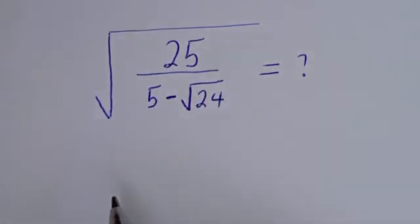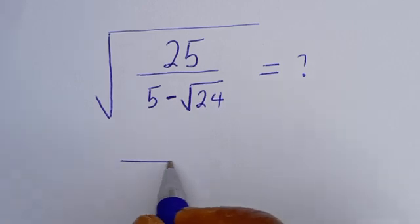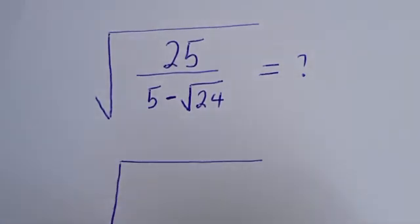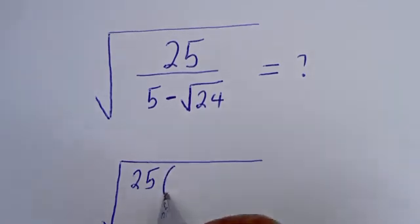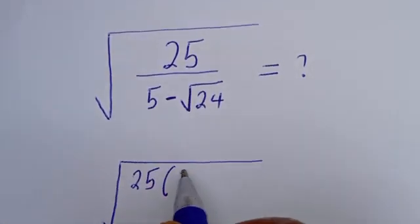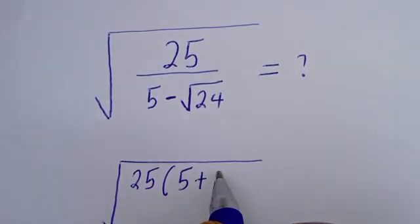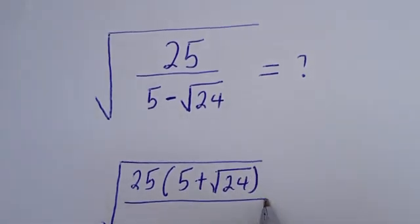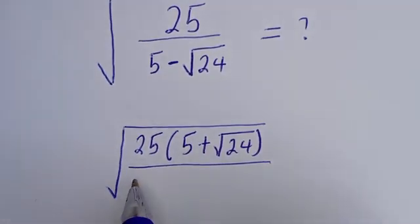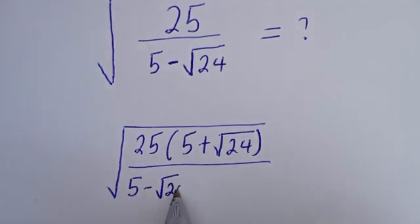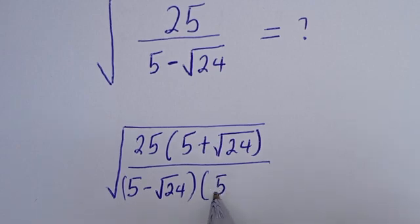That is, we have square root of 25 multiplied by the conjugate, which is 5 plus square root of 24, then divided by 5 minus square root of 24, then multiply by 5 plus square root of 24.